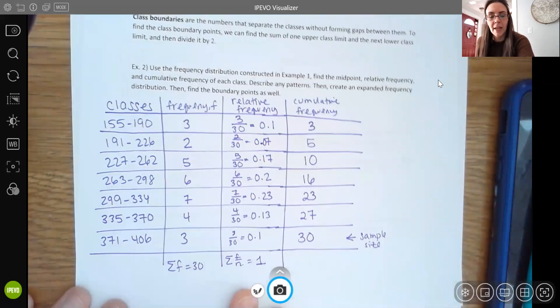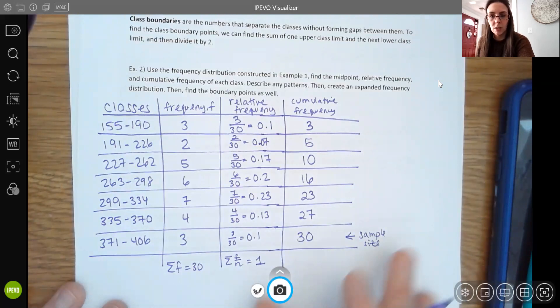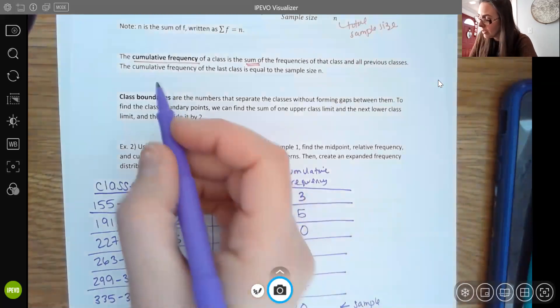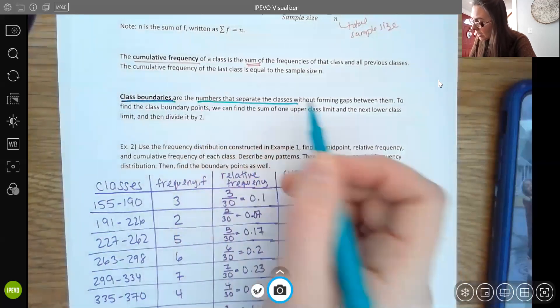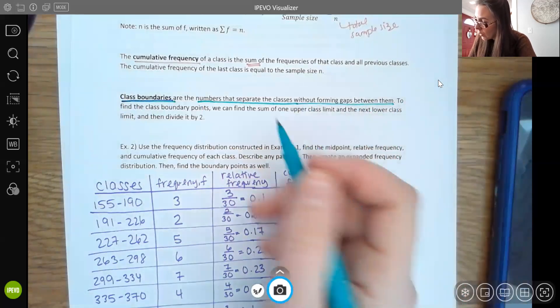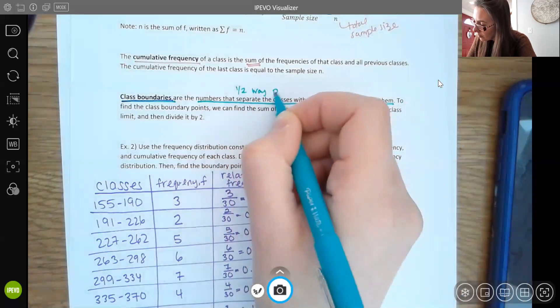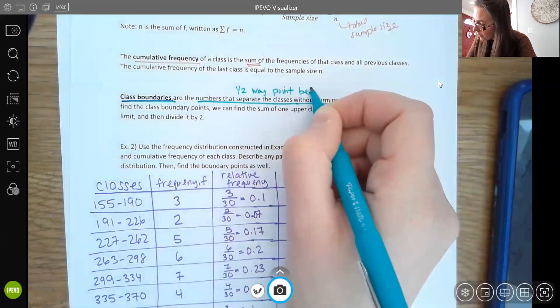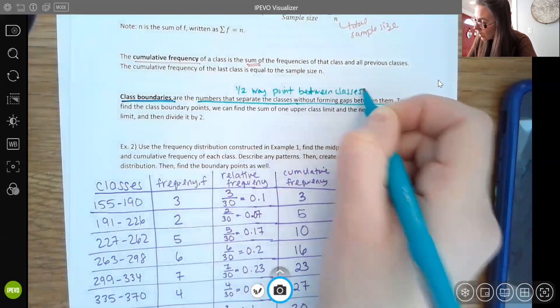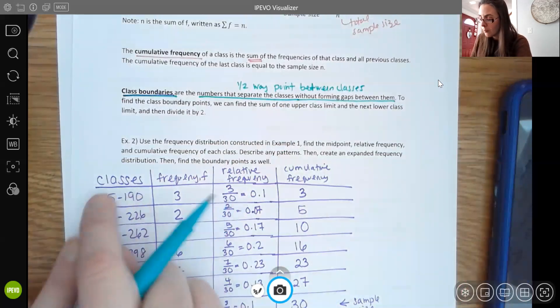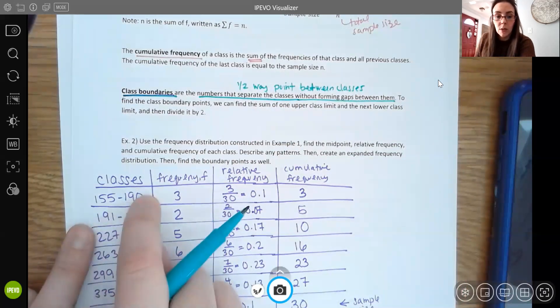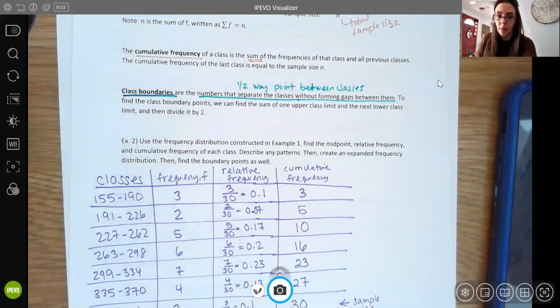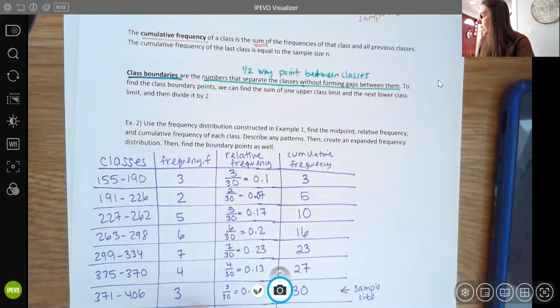One more definition I want to talk about here, which again we're going to use a lot more when we get to histograms in the next lectures. And that would be the class boundaries. So your class boundaries are the numbers in between the classes. It's basically that halfway point between the classes. For instance, notice here, my first class ends at 190 and my next class starts at 191. So the halfway point between those, which would be 190.5, is my boundary point. So your boundary points occur in between the classes. It's that average or that halfway point between all your classes.